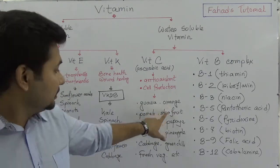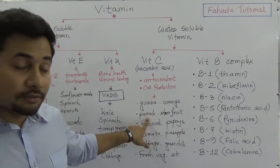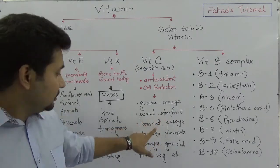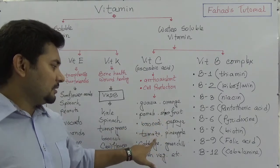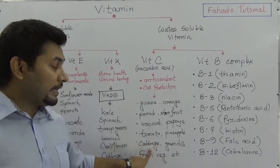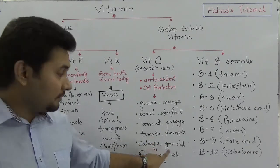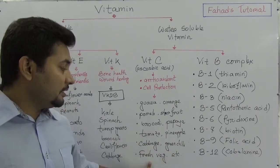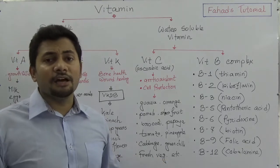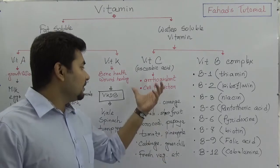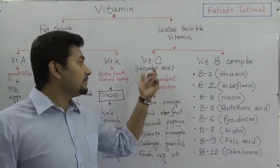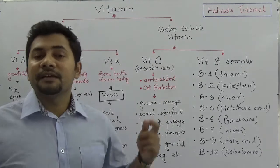Vitamin C food sources include: orange, pamelo, star fruit, broccoli, papaya, tomato, pineapple, cabbage, green cherry, fresh vegetables, and many more.